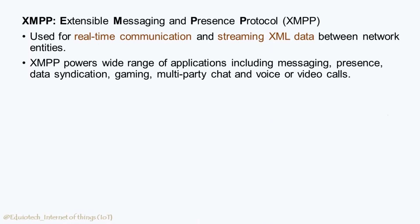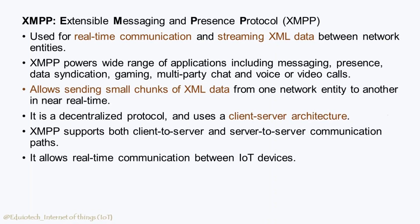XMPP — Extensible Messaging and Presence Protocol — is used for real-time communication and streaming XML data between network entities. XMPP powers a wide range of applications including messaging, presence, data syndication, gaming, multi-party chat, and voice or video calls. It allows sending small chunks of XML data from one network entity to another in near real-time. It is a decentralized protocol using a client-server architecture, supporting both client-to-server and server-to-server communication paths, enabling real-time communication between IoT devices.